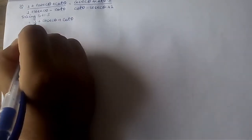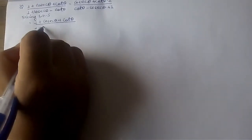Today I am going to solve a question related to trigonometry — specifically trigonometric identities. The question is: 1 plus cosec theta plus cot theta divided by 1 plus cosec theta minus cot theta, equals cosec theta plus cot theta minus 1 whole divided by cot theta minus cosec theta plus 1. I am doing the solution by taking the left hand side.